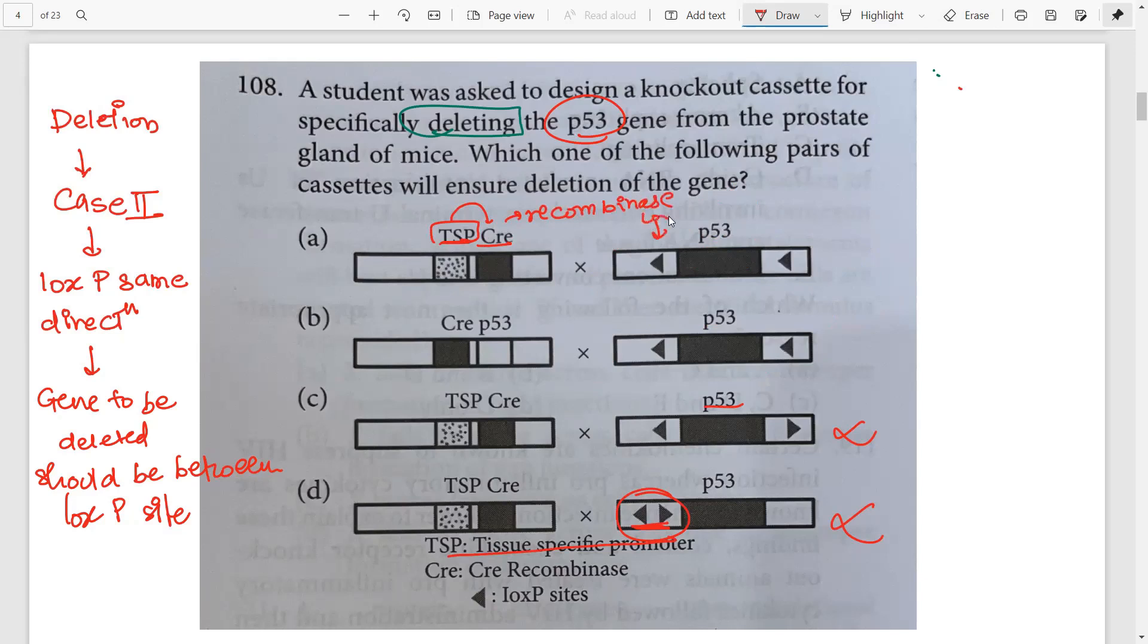In the other half, you have TSP, the tissue-specific promoter, and CRE. When the promoter is active, CRE will be secreted, and CRE is the recombinase that recognizes LOXP sites. If CRE is not present, how will deletion occur? In this case, next to CRE you have p53—what will you do with p53 there? So this is incorrect. The most correct is the first option.